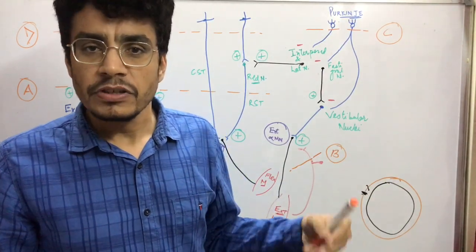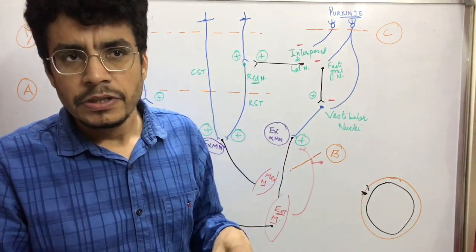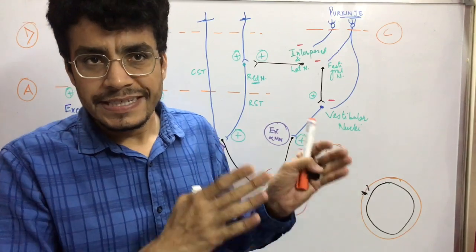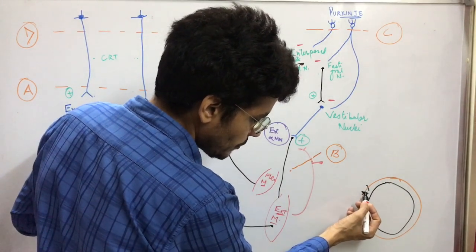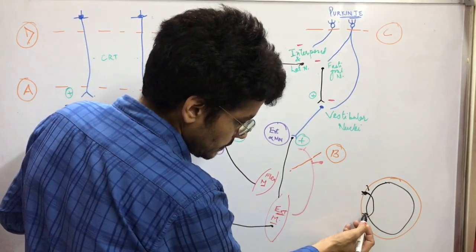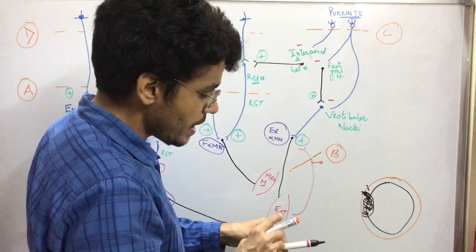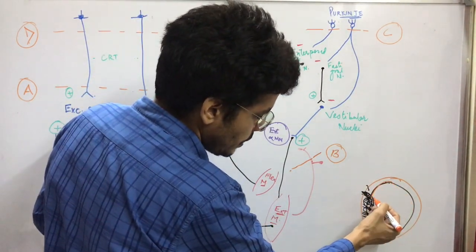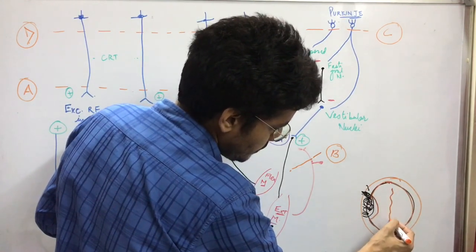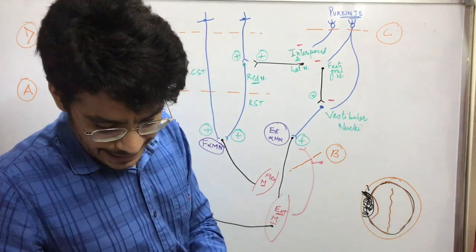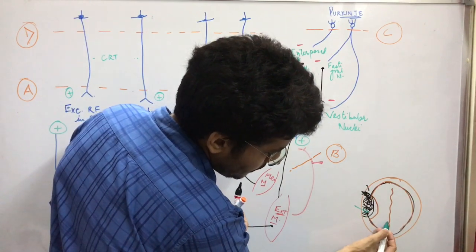Or it can be subarachnoid hemorrhage or intracerebral hemorrhage. We won't go into detail about what kind these are — just imagine there is hemorrhage within this cranial cavity. If there occurs any sort of hemorrhage within this cranial cavity, suppose there is this bleeding, this collection of fluid — then what will happen to the brain? This brain will get compressed. There is compression because of the collection of fluid, and this is the midline.